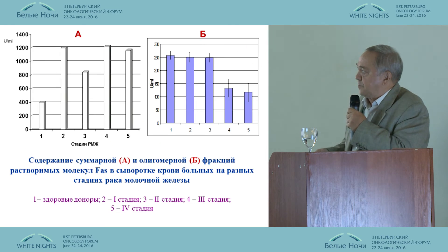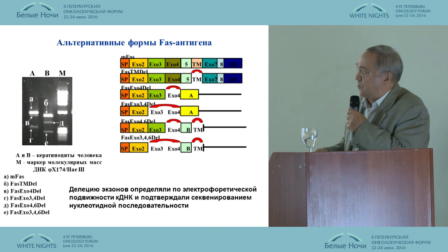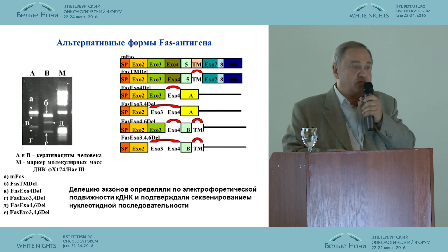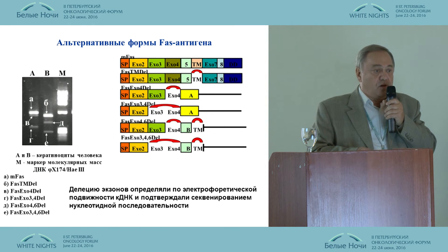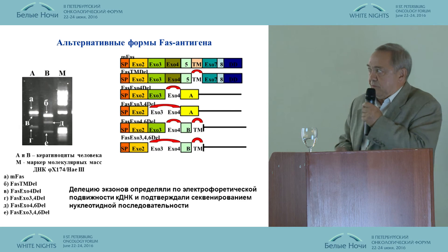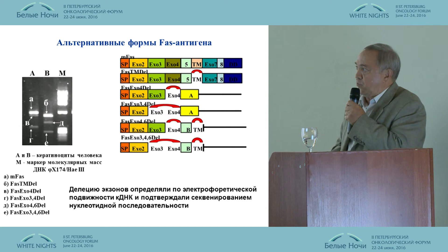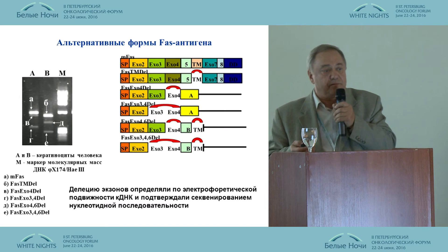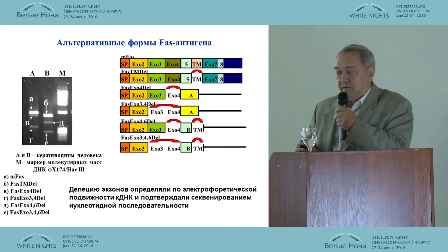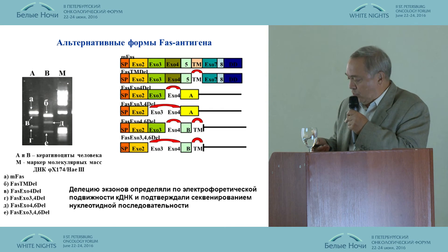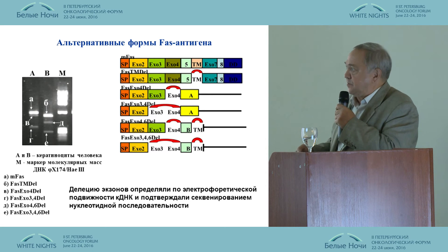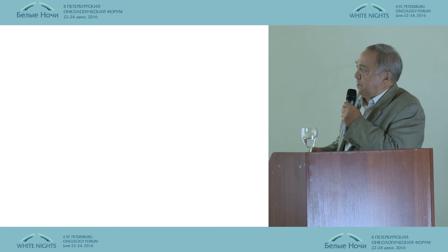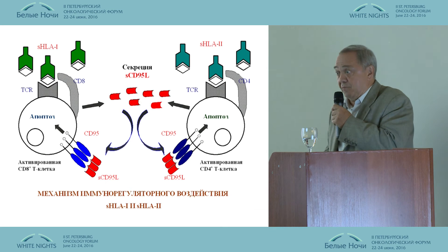The situation might be even more complex. Because of alternative splicing, the FAS antigen might generate several soluble forms. There may be a dominating form and a number of minor forms. It is believed that those minor forms have a regulatory function that impacts the interaction between FAS and FAS ligand.